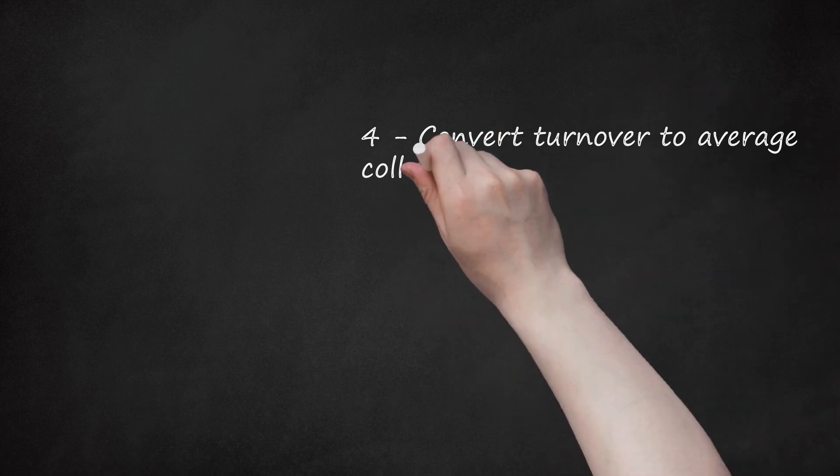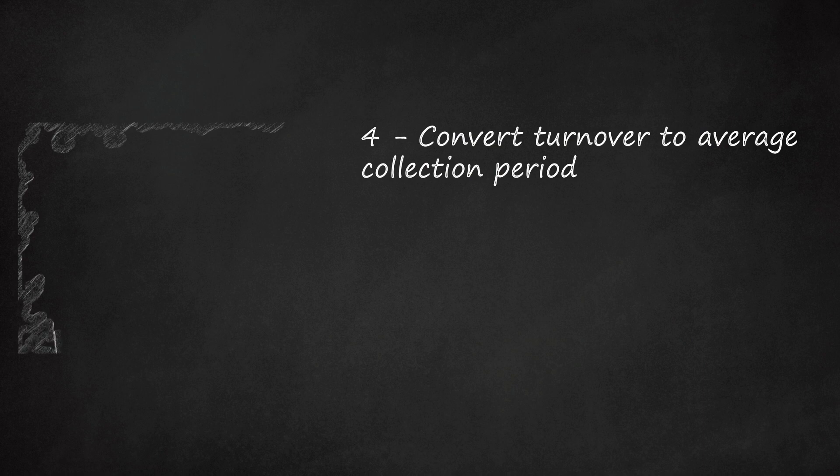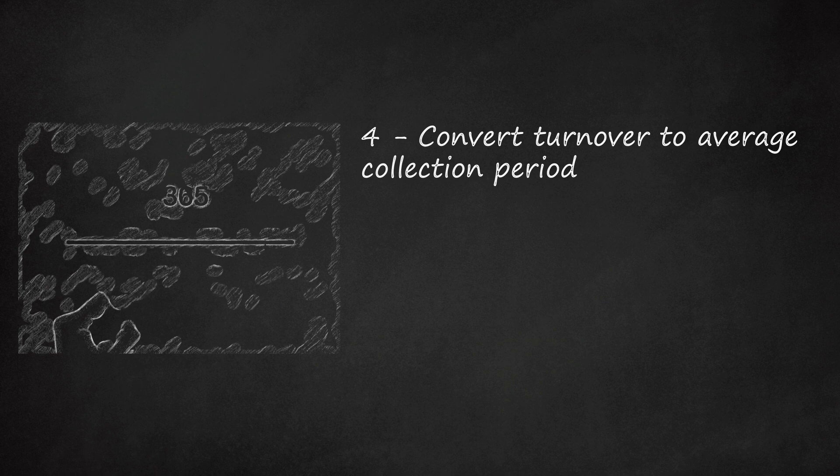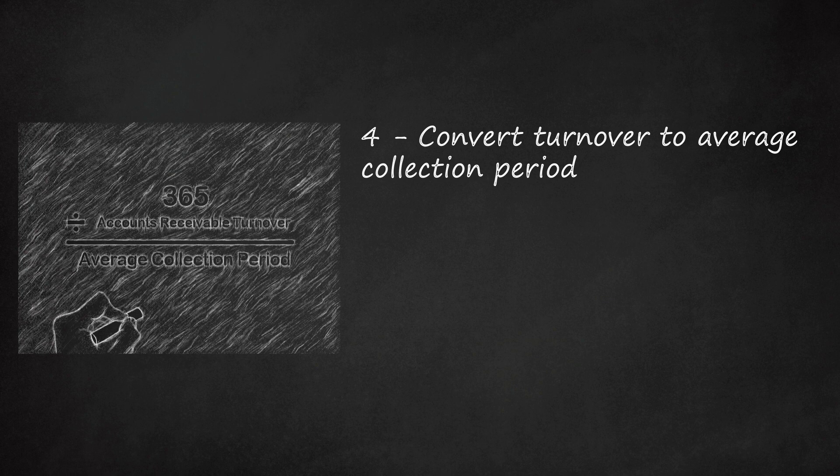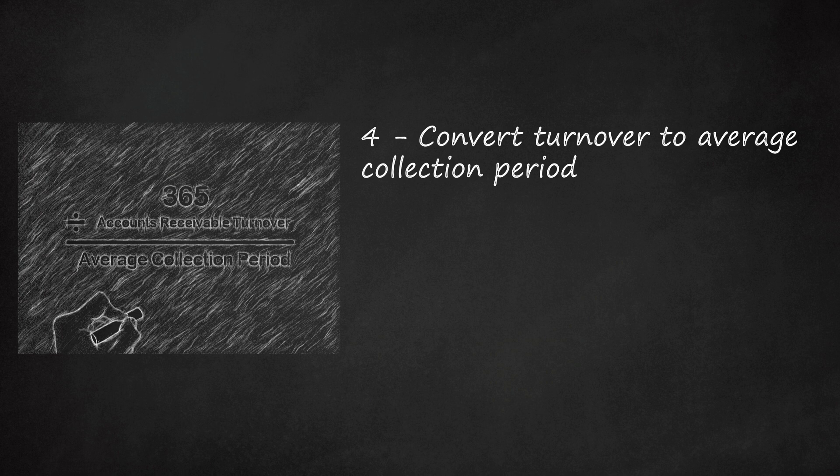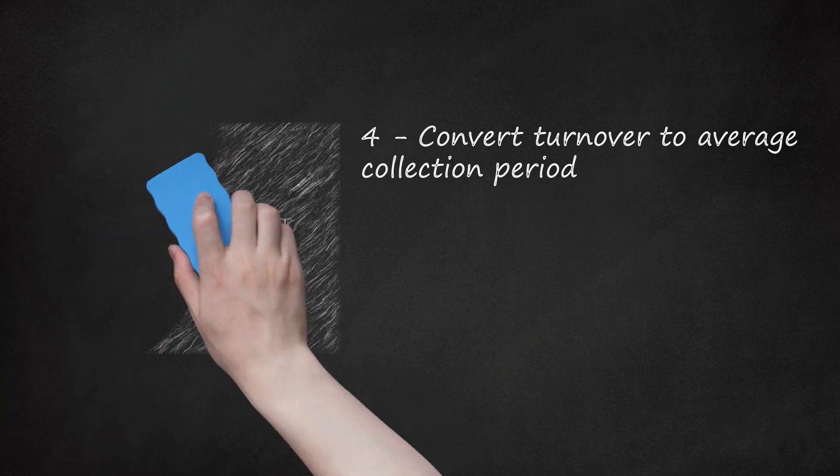Convert turnover to average collection period. This ratio is calculated as 365 divided by accounts receivable turnover. The result represents how many days the average credit sale stays in accounts receivable until being paid. This ratio can be analyzed to figure out how liquid a company is versus its historical liquidity or against that of other companies. It can also be used to determine how efficient collections are versus extension of credit. This ratio is simply another expression of accounts receivable turnover. Ideally, the average collection period should be reduced over time by improving collection efficiency.